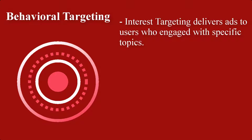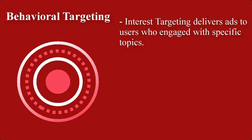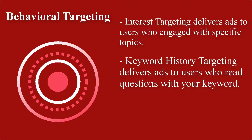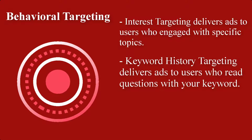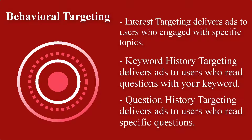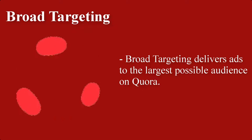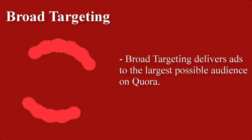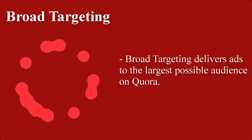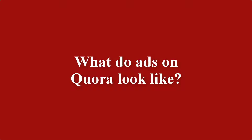For behavioral targeting: interest targeting delivers ads to users who engaged with specific topics; keyword history targeting delivers ads to users who read questions containing your keyword; and question history targeting delivers ads to users who read specific questions. For broad targeting, broad targeting delivers ads to the largest possible audience on Quora.